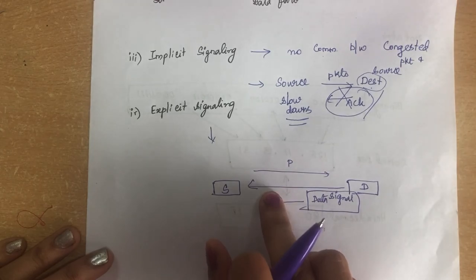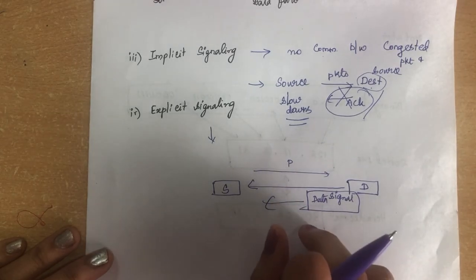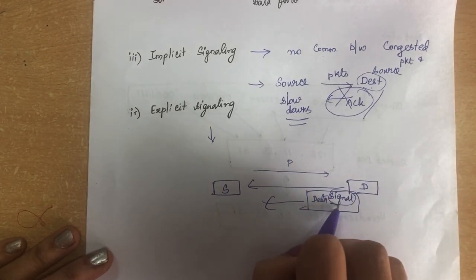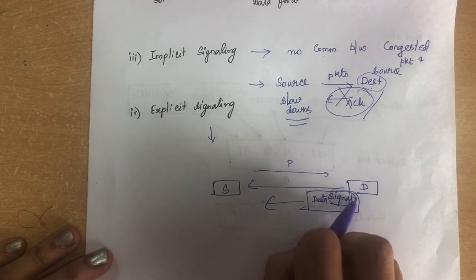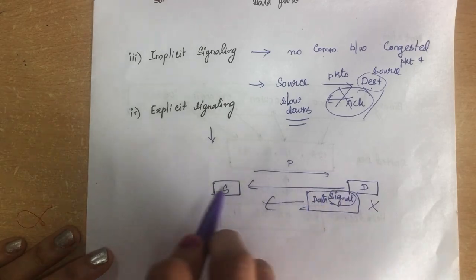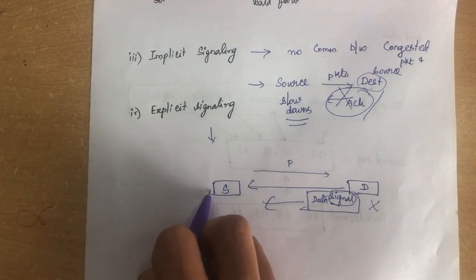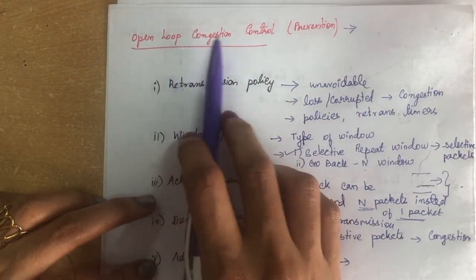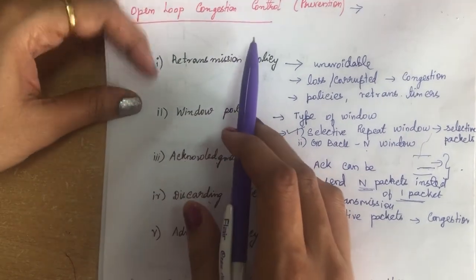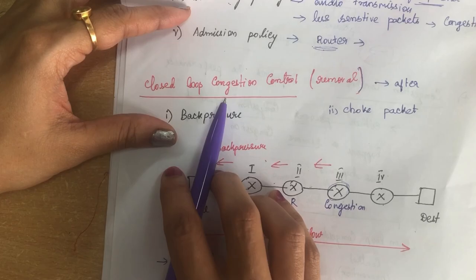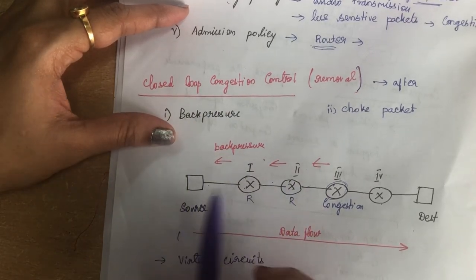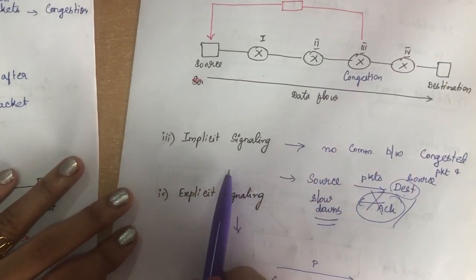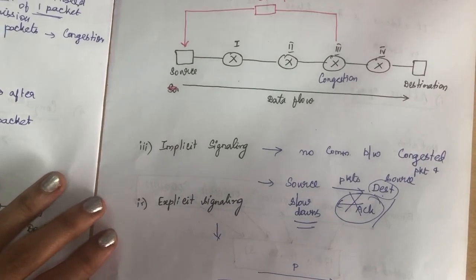Explicit signaling is different from choke packet. While the destination sends acknowledgement, it also sends a signal along with the data to explicitly tell the source to slow down its process. Unlike choke packet where a separate packet is sent, here the signal is embedded with the data sent from the congested destination to the source to reduce congestion.